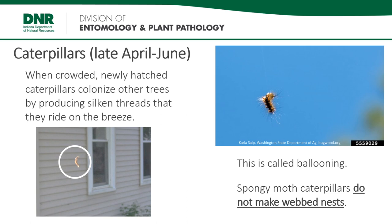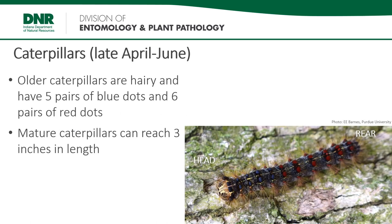Spongy Moth caterpillars do not make webbed nests. The caterpillars are covered in coarse hairs. As they mature, Spongy Moth caterpillars develop a characteristic marking: five pairs of blue dots and six pairs of red dots along their back. They can reach up to three inches in length.